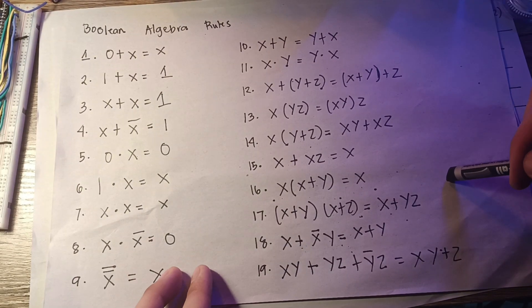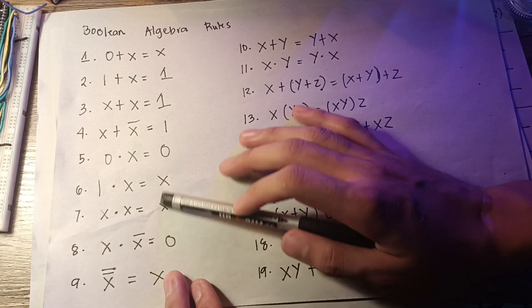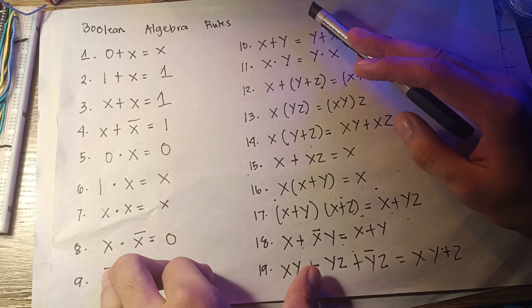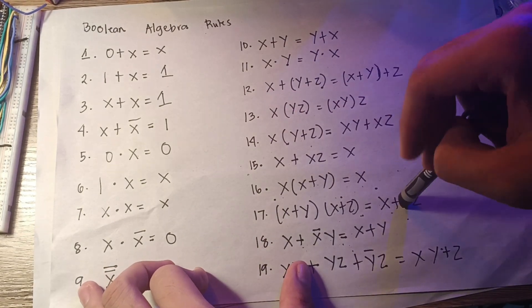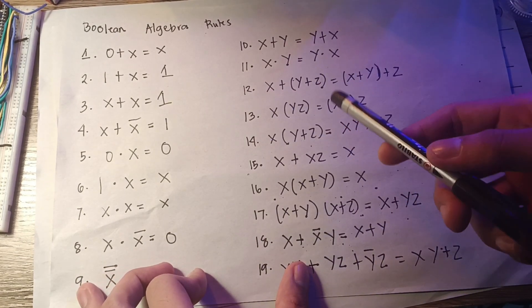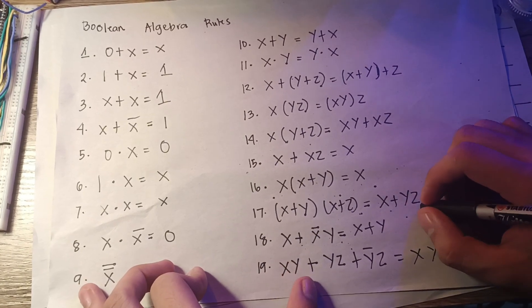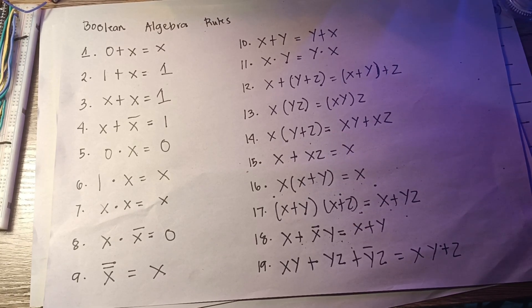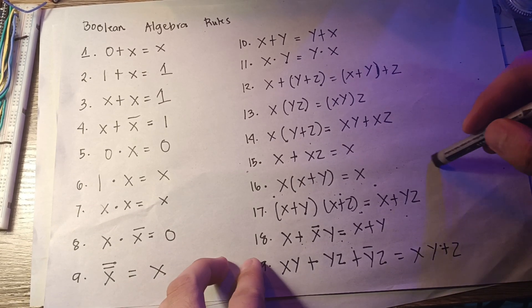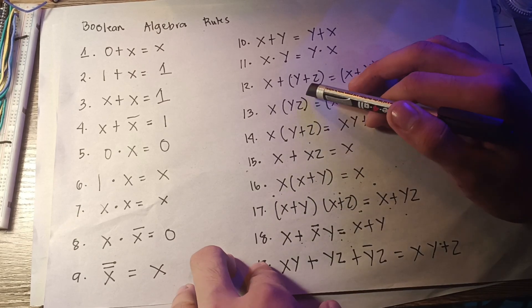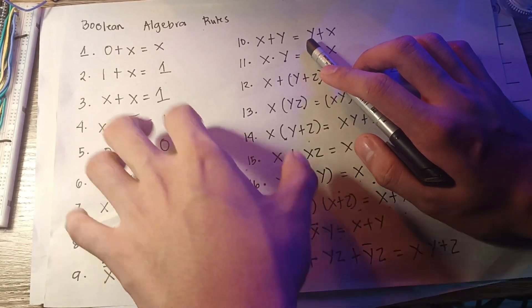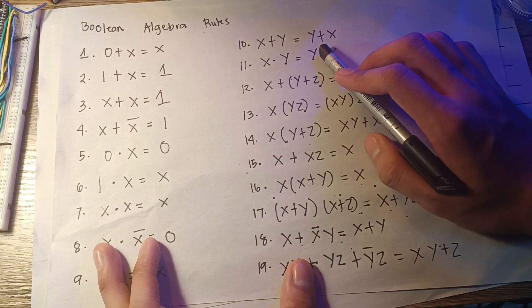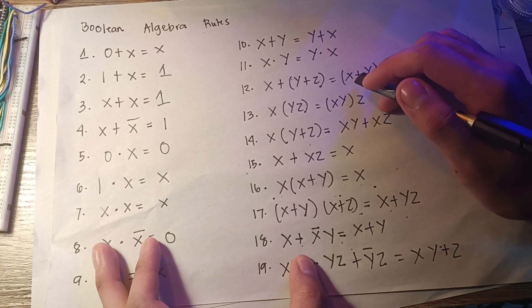In the next videos, we will be doing a lot of these rules and applying Boolean algebra rules to our circuits so that they will be easier to construct. I will also teach you the Karnaugh map, which is much simpler. It is also nice knowing these rules because you can combine the Karnaugh map with Boolean algebra to build the simplest circuit possible. See you in the next videos.